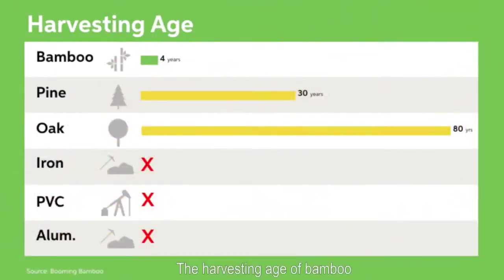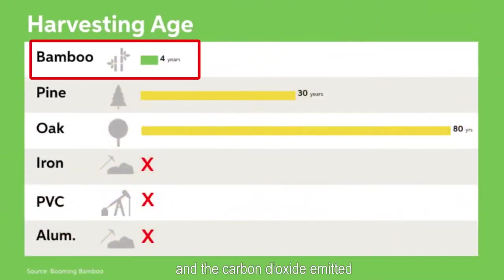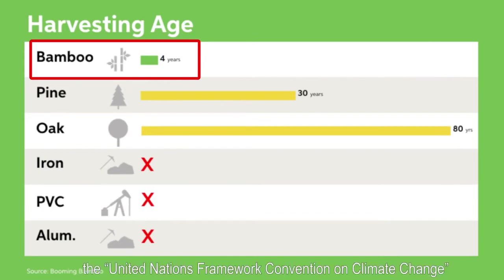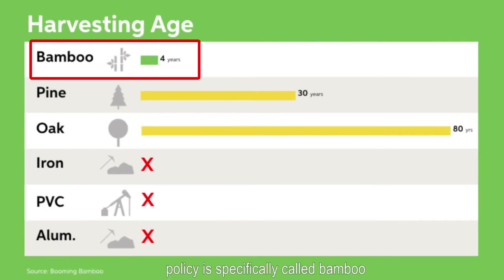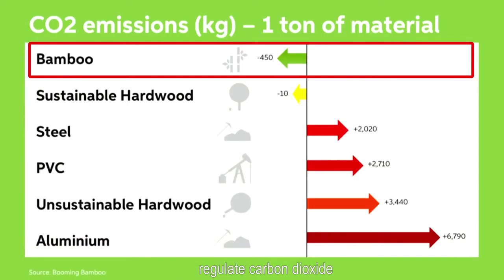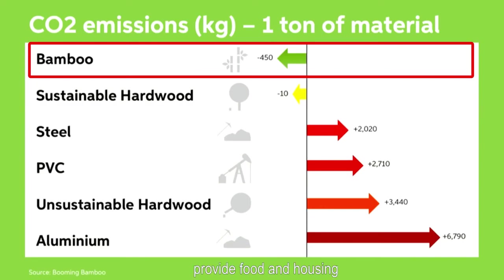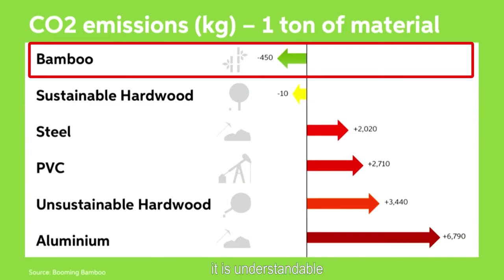The harvesting age of bamboo is only four years, and the carbon dioxide emitted per ton of the commodity process is much lower than that of other raw materials. Therefore, the United Nations Framework Convention on Climate Change policy specifically calls bamboo a green industry that can regulate carbon dioxide, replace concrete and fuel, support continued construction, mitigate and adapt to climate change, reduce disaster risks, and provide food and housing — underscoring that bamboo has unlimited potential in the green economy.